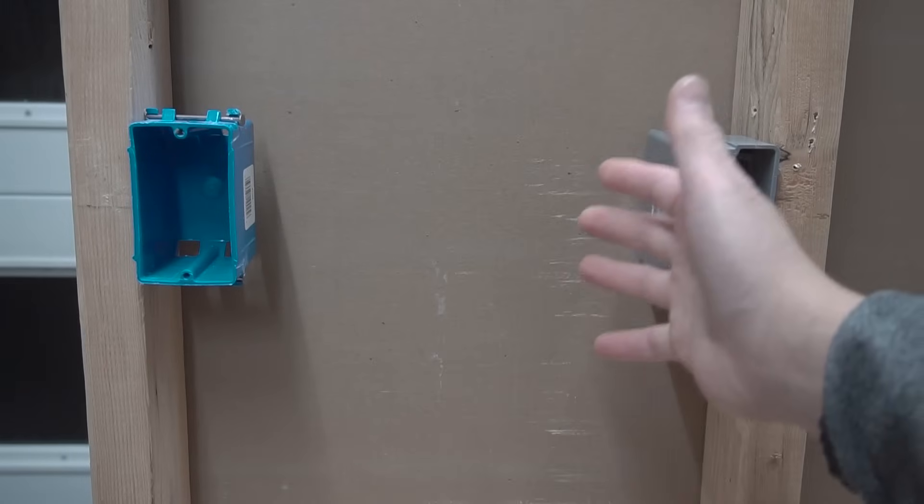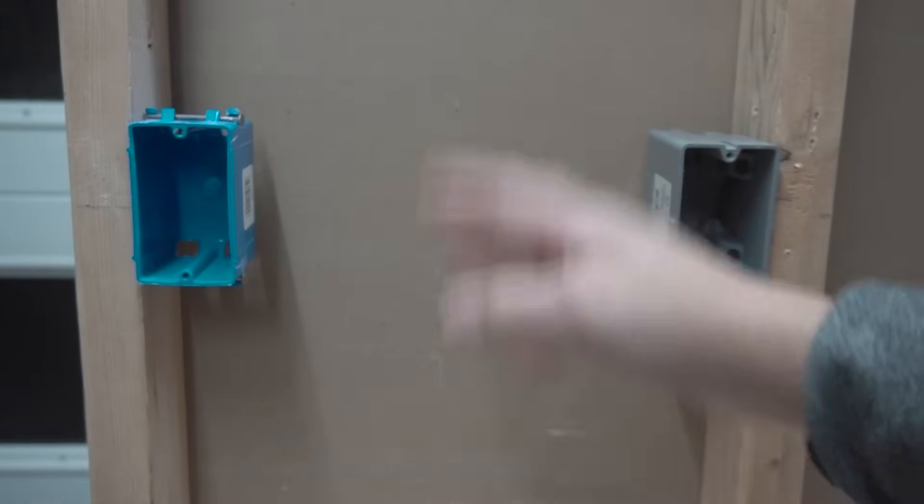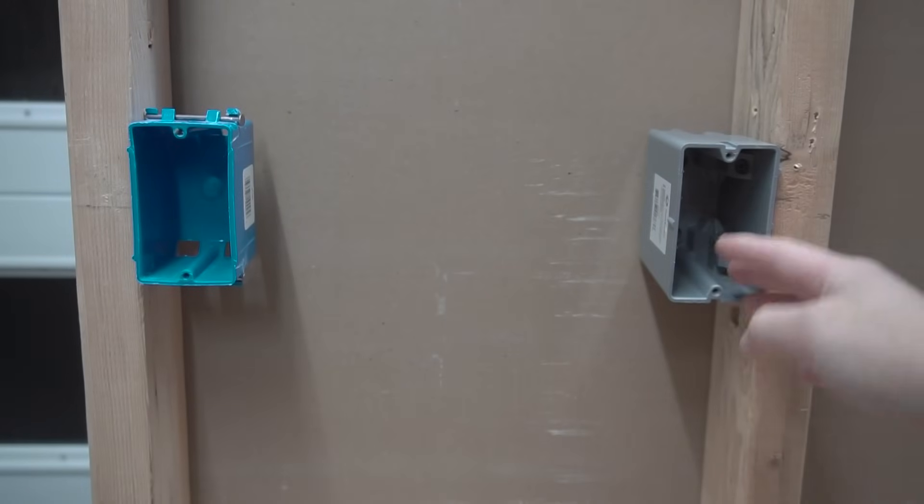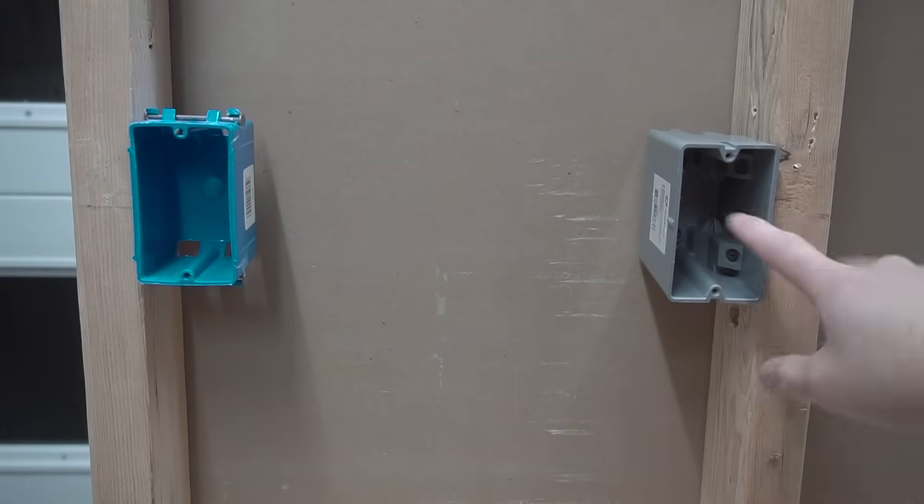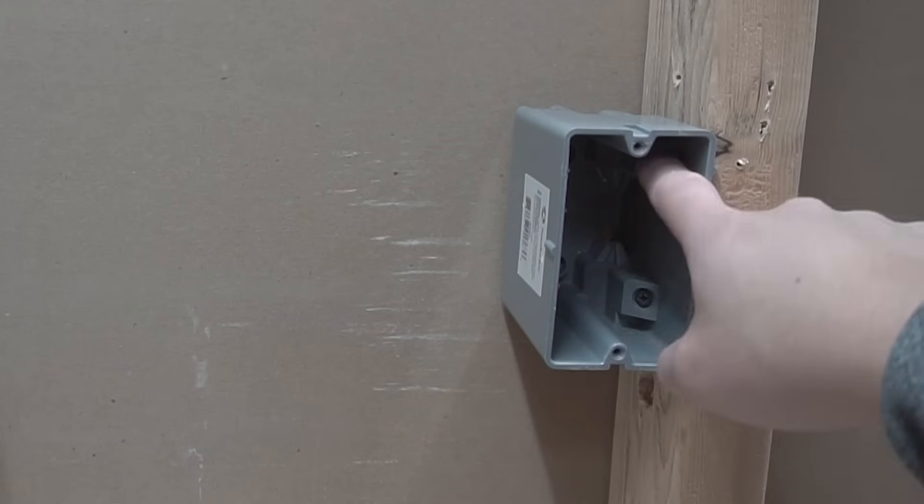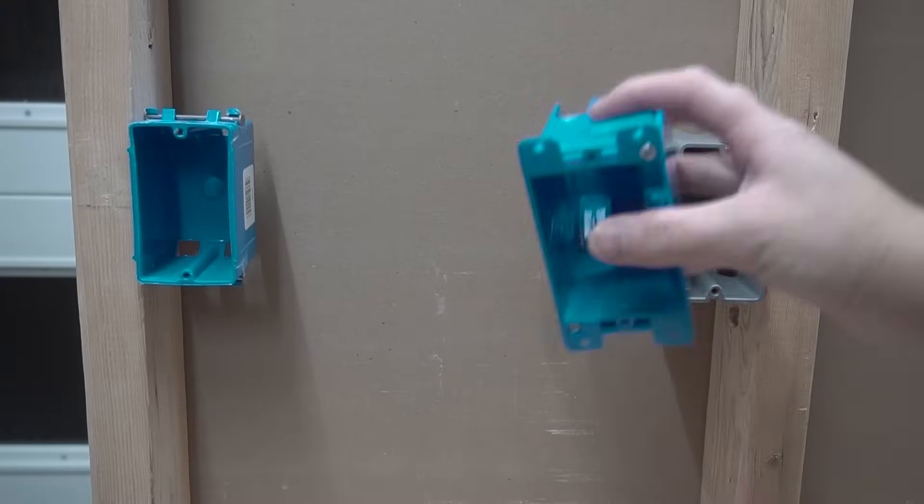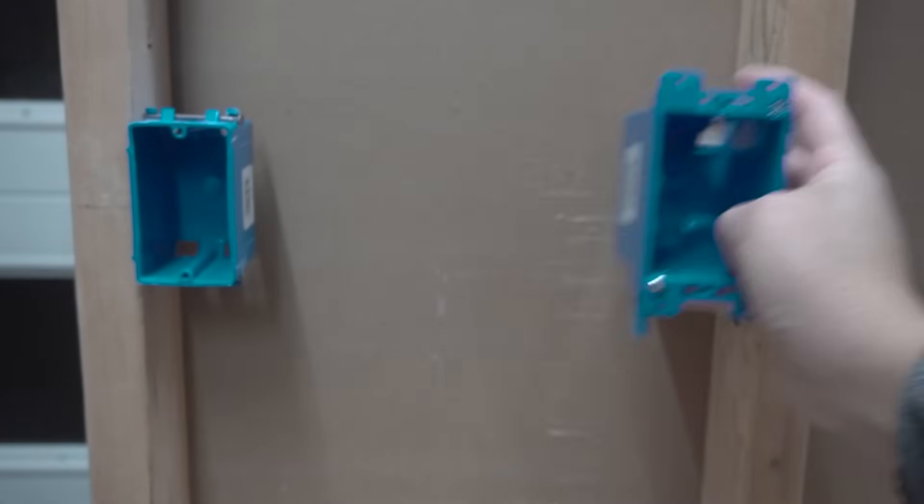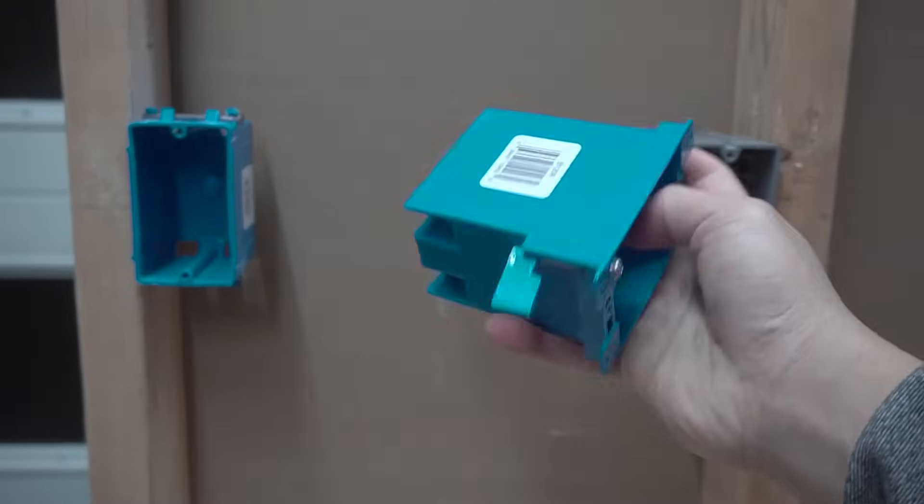So, what I already have installed here are single gang J-boxes. You can either use a new work, which is the one nailed to the stud if you have an open wall and no drywall yet. But if you have drywall already installed, I highly suggest that you use an old work that is adjustable, which is the screw-in type like this one.